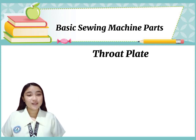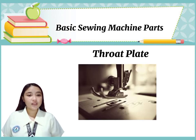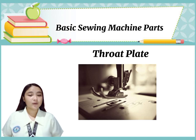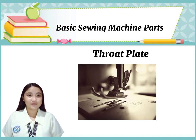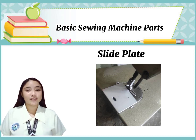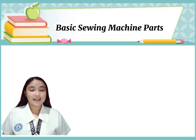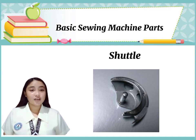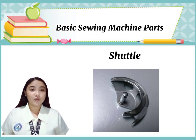Eighth, throat plate — it is the window of the feed dog and it is where the bobbin threads come out. Ninth, slide plate — it is a movable plate that covers the shuttle and bobbin case. Tenth, shuttle — it holds the bobbin case while sewing.